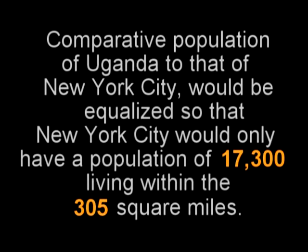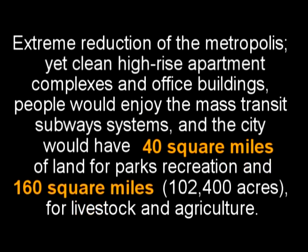A comparative equalization between Uganda and New York City would leave New York with only 17,300 people in the same 305 square miles. This would mean an extreme reduction of metropolis, yet still very nice high-rise apartment complexes, office buildings, and mass transit systems like the subways. All of New York City's population would have 40 square miles set aside for parks and recreation, and the remaining 160 square miles — or 102,400 acres — for livestock and agricultural purposes. No one would go hungry, and there would be plenty for all.